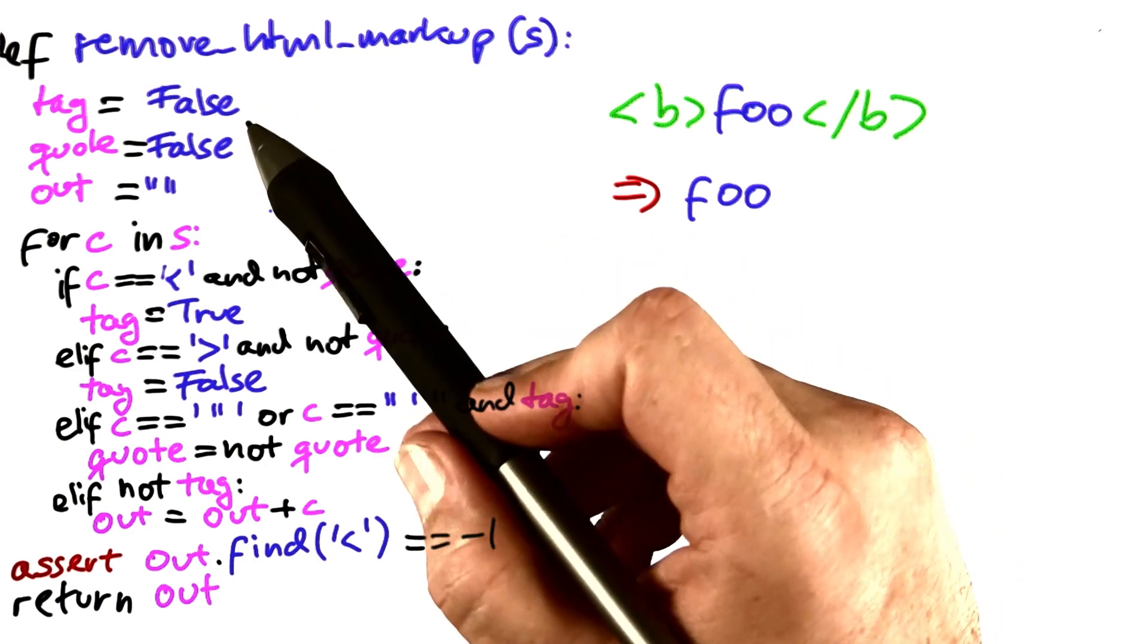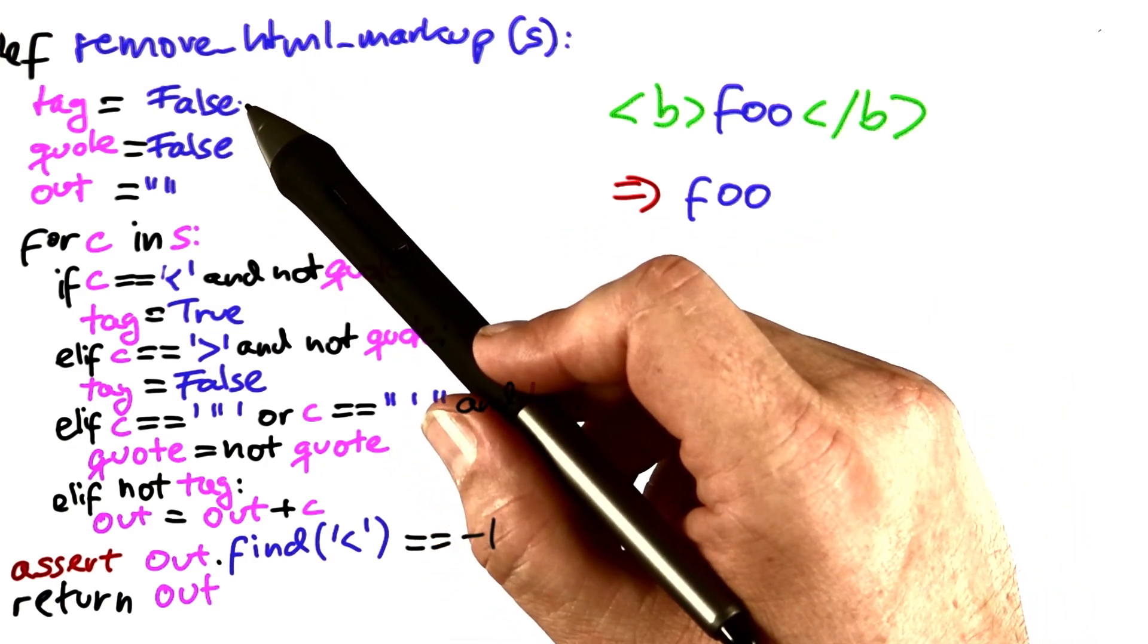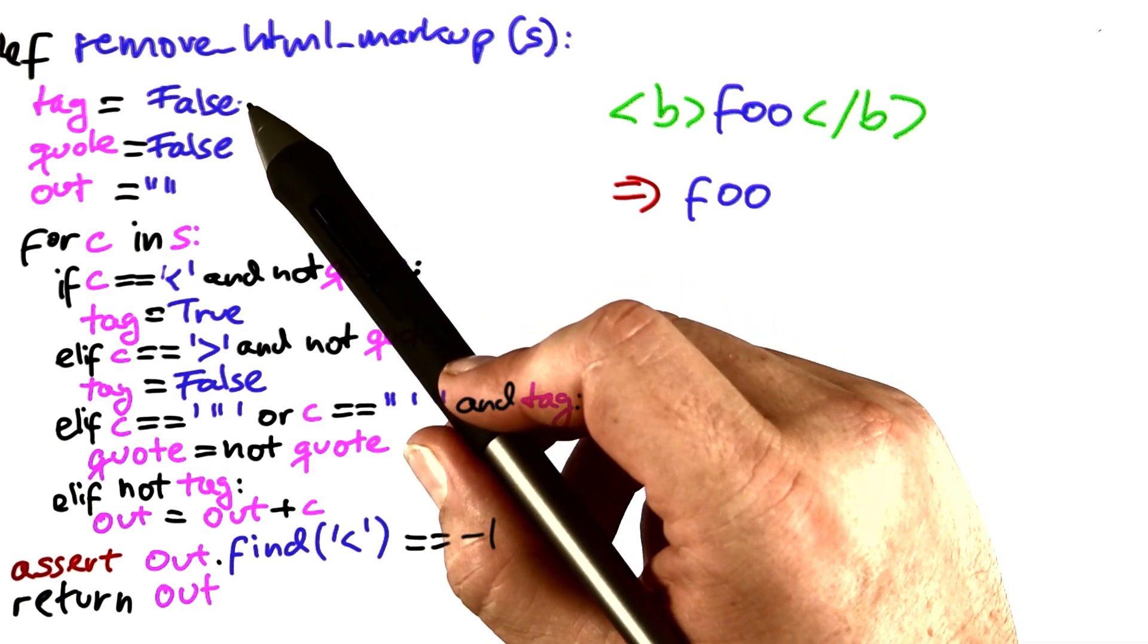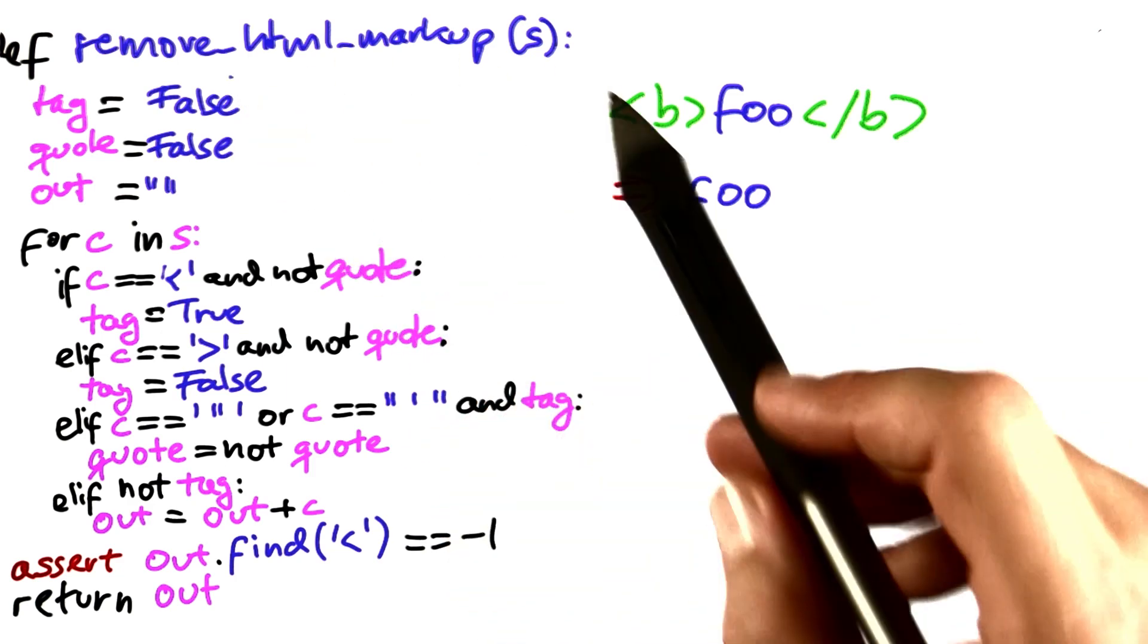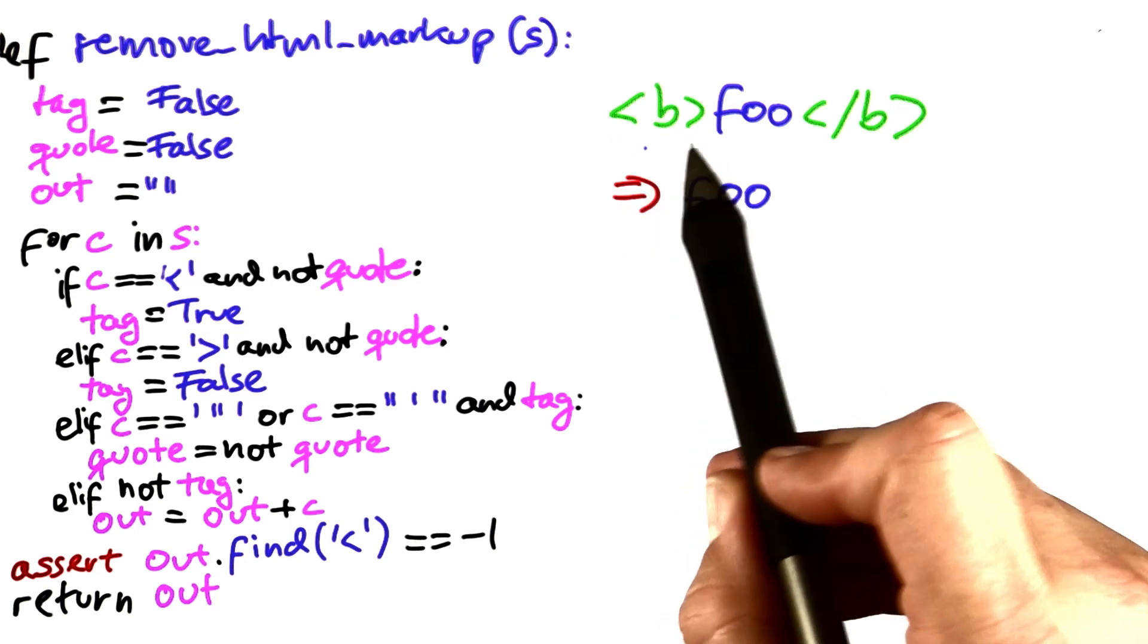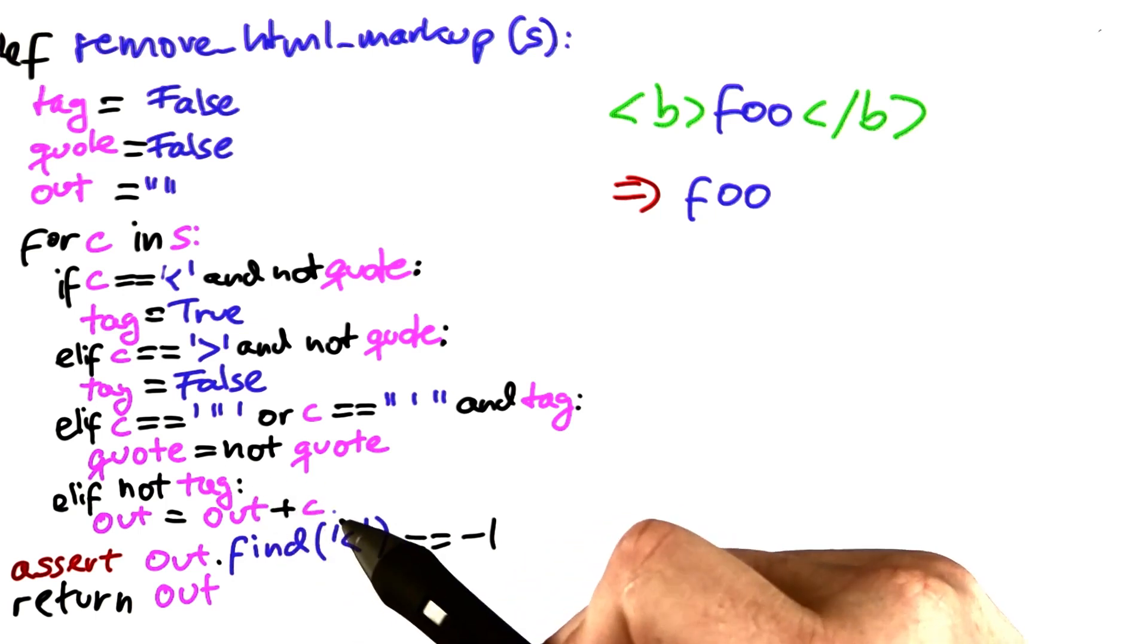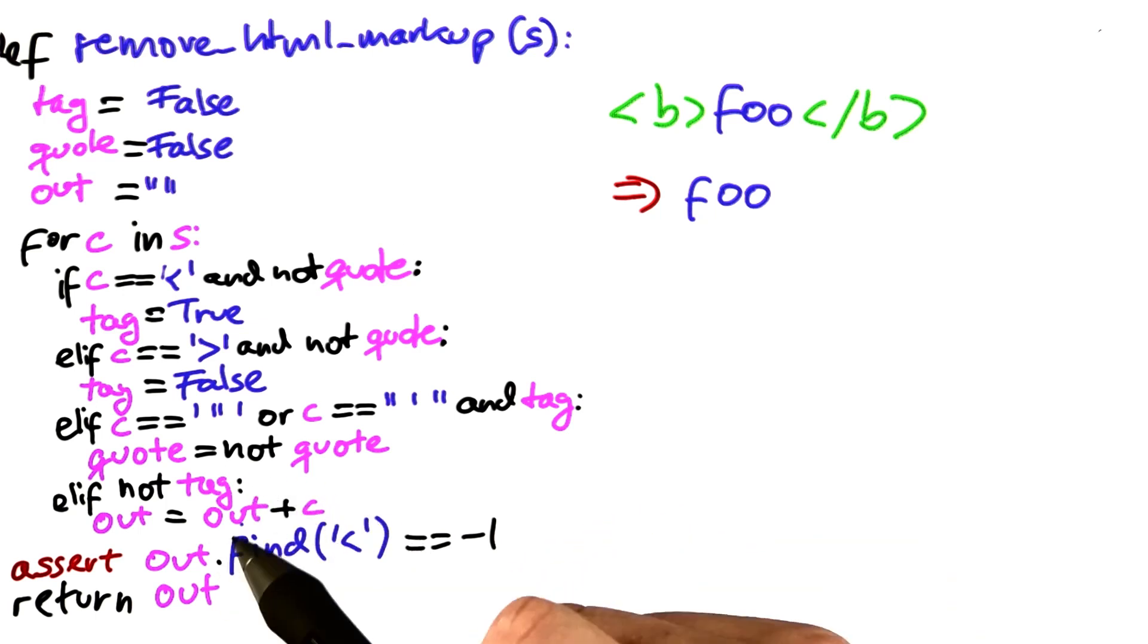For this, it makes use of a number of variables. Tag checks whether we currently are processing a tag. That is, during these three characters, tag should be true. And only if we are not in tag mode do we actually add the characters to the out variable. And the out variable, at the end, is being returned.